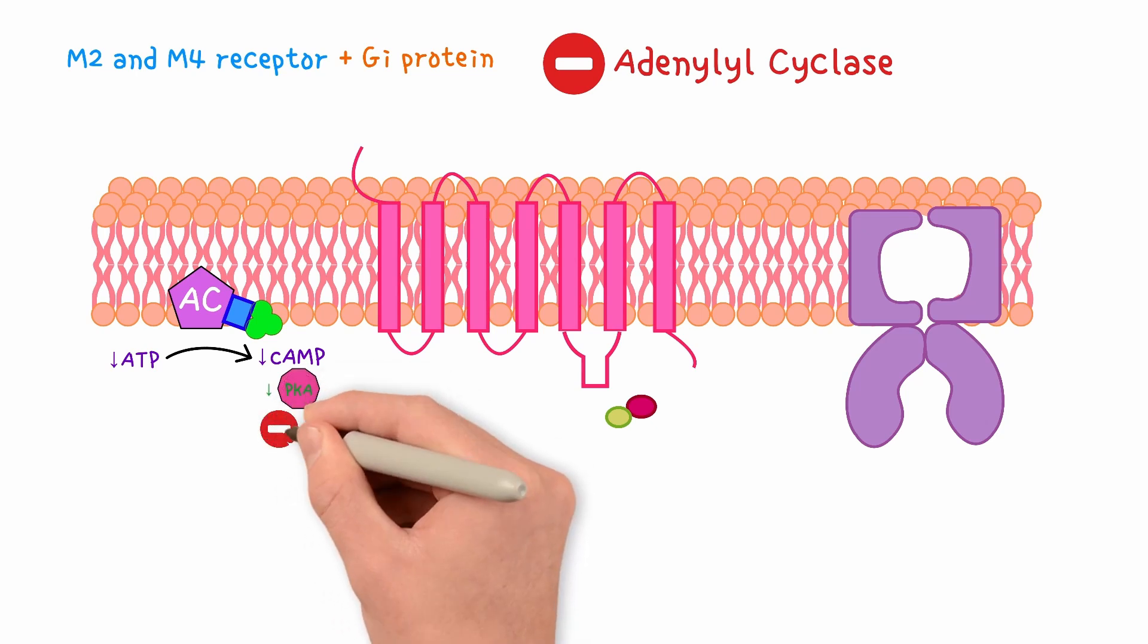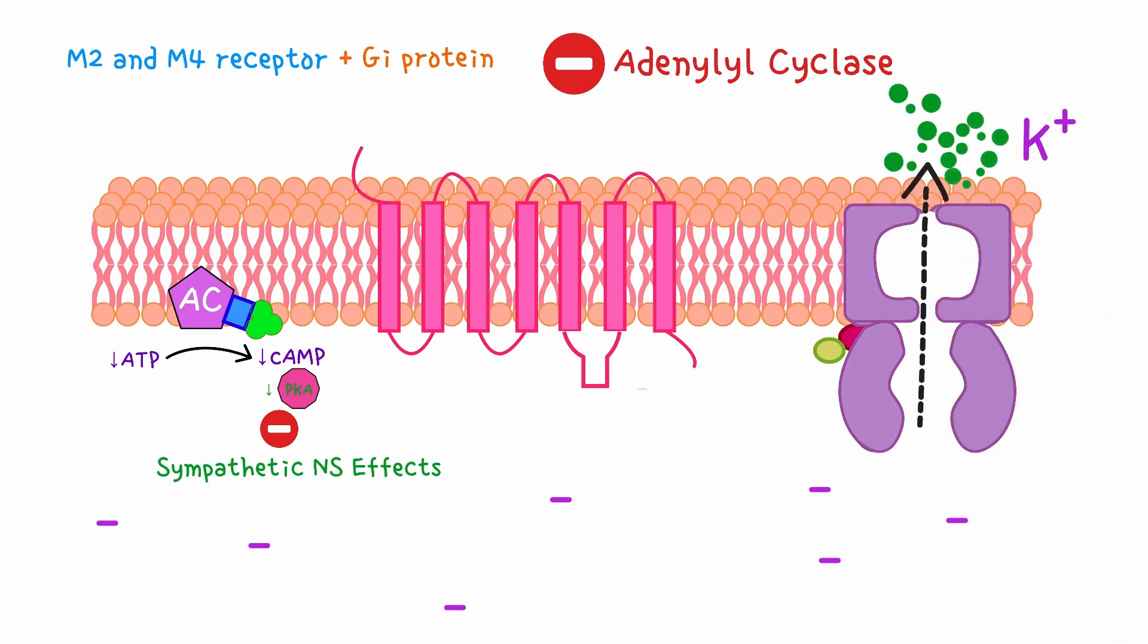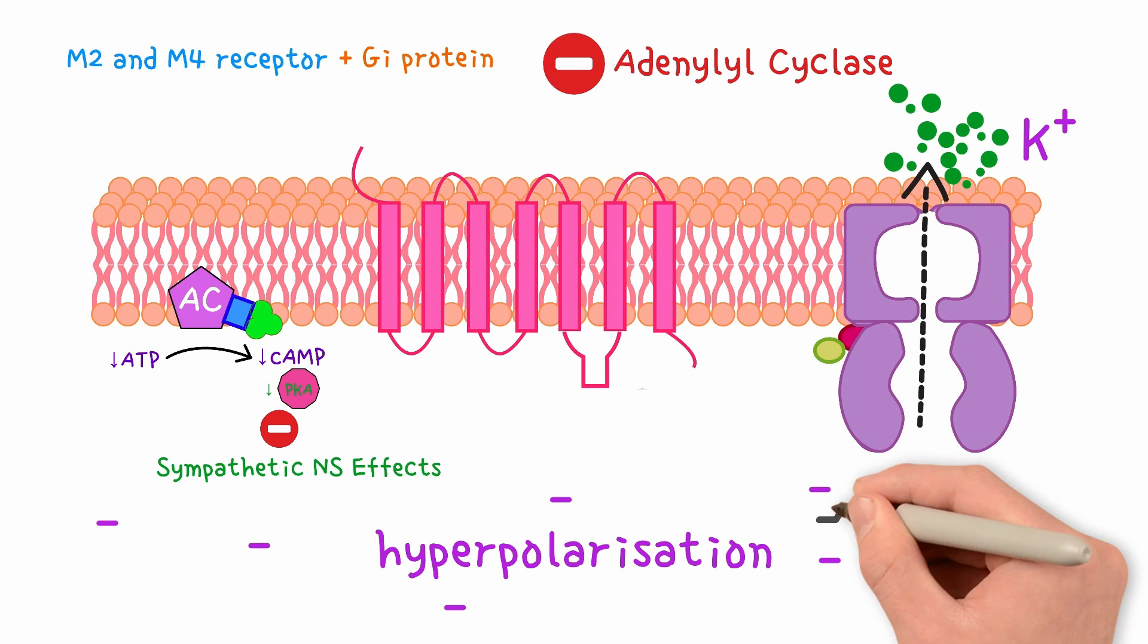which inhibits the sympathetic nervous system's stimulatory effects. The beta-gamma part of the GI subunit also dissociates and directly binds to and opens specific potassium channels, called potassium acetylcholine channels or GIRK channels. Potassium flows out of the cell,